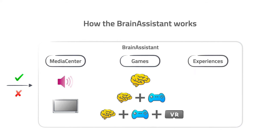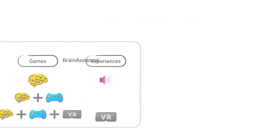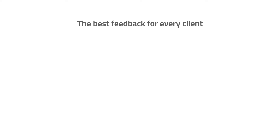The third category is neuro or bio experiences — a bit more abstract. For example, you take a walk through a forest where parts of your environment are influenced by your brain or bio activity. The sun rises when you receive a reward — say you become more focused or relaxed — and gets darker as negative feedback. There are also sound experiences for clients who don't want to play games per se, but want to experience something.